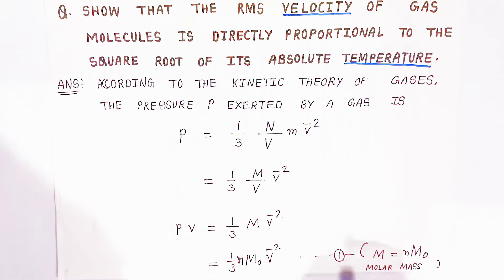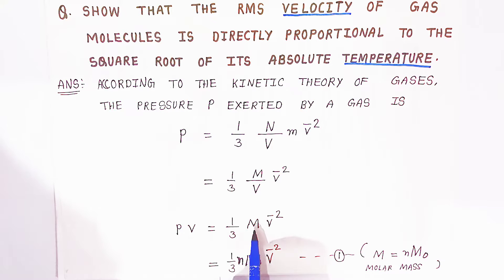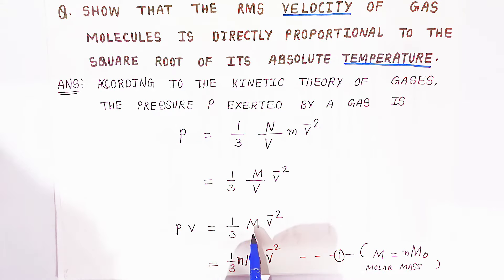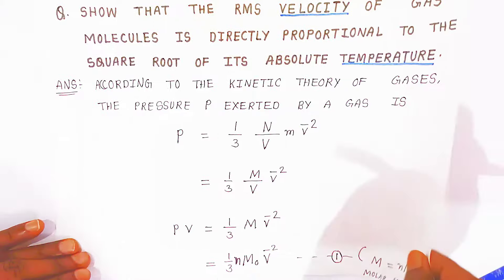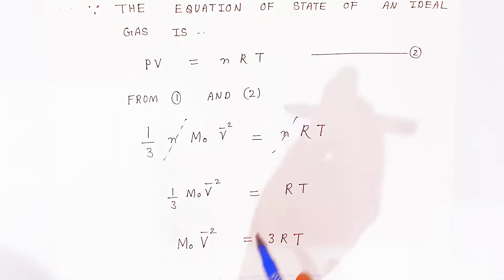When you take N number of moles of gas, it becomes PV = (1/3) × N × M₀ × v̄², where M₀ is the molar mass — the mass of N number of molecules. When expressing mass of gas in molar terms, you have to take M₀, that is the molar mass.